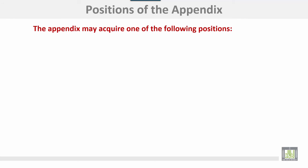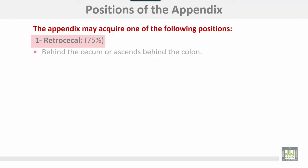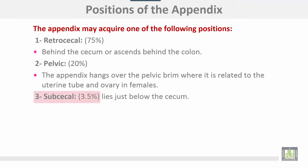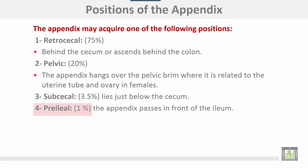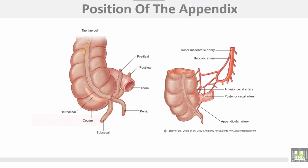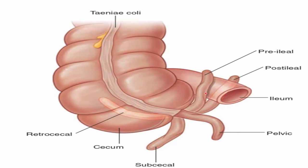Positions of the appendix. The appendix may acquire one of the following positions. About 75% retrocecal — behind the cecum, or ascending behind the colon. Pelvic, about 20% — the appendix hangs over the pelvic brim where it is related to the uterine tube and ovary in females. Subcecal, 3.5% — lies just below the cecum. Pre-ileal, about 1% — the appendix passes in front of the ileum. Post-ileal, about 0.5% — the appendix passes behind the ileum.